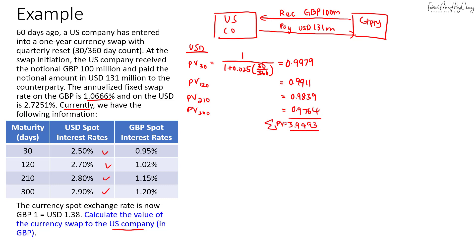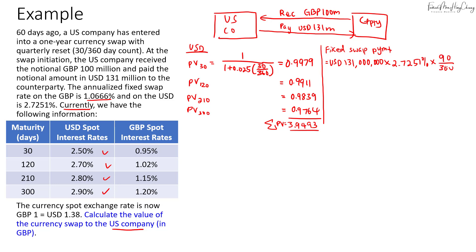Now we calculate the fixed swap payment. The fixed swap payment every quarter is based on the notional of 131 million dollars, multiplied by the dollar rate of 2.7251%, multiplied by 90/360. This gives a fixed swap payment of 892,470 US dollars every quarter.